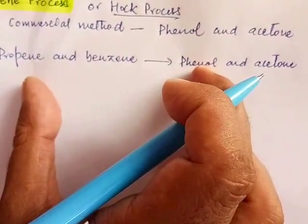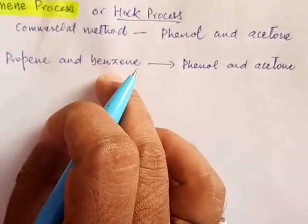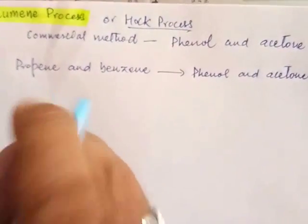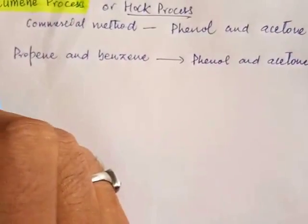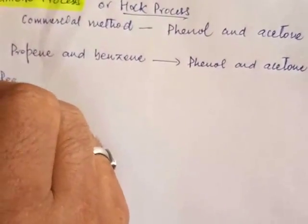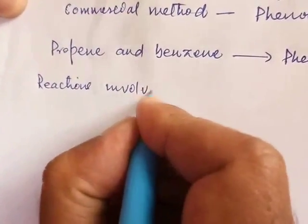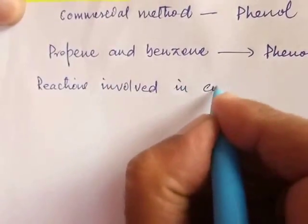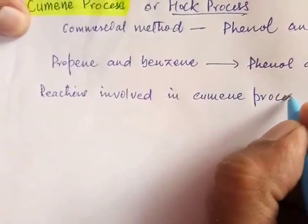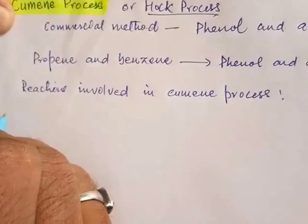The Cumene Process involves three reactions. Propene and benzene are first converted to cumene, and so on. These three steps or reactions are involved, which we are going to discuss one by one in the cumene process.